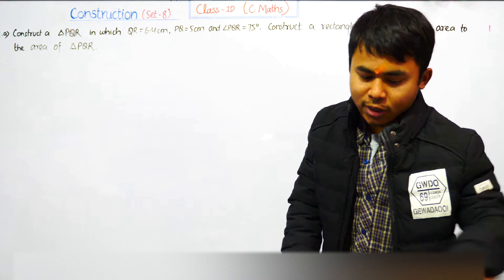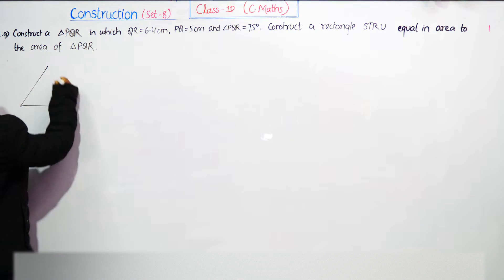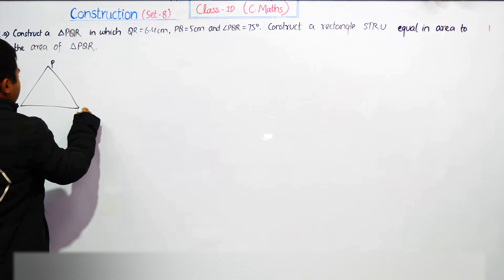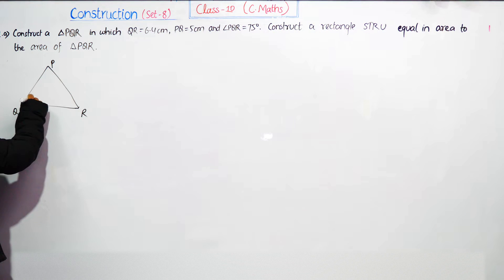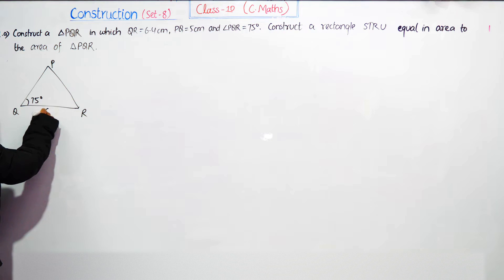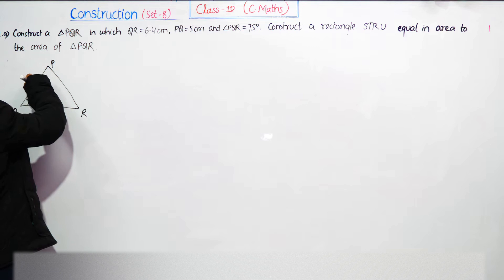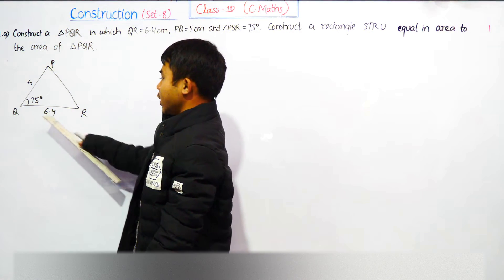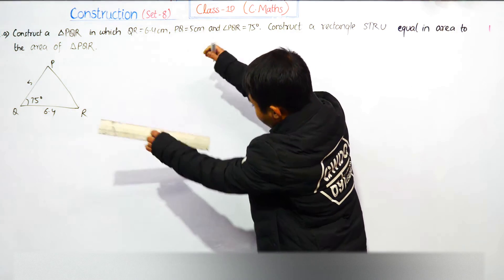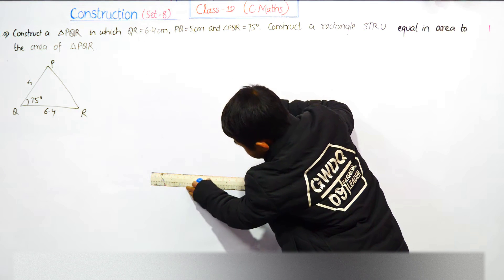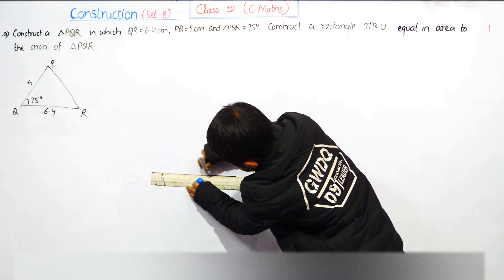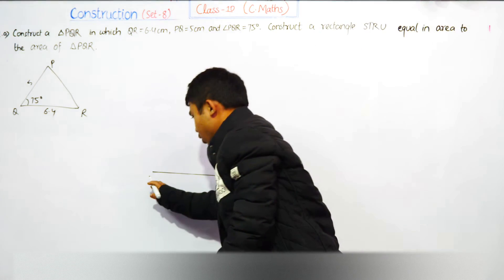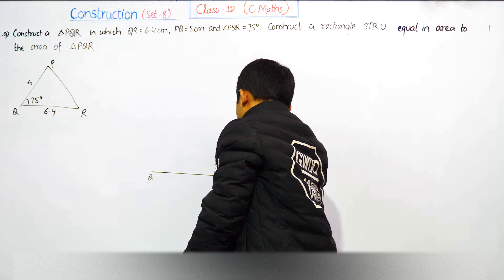Now let's construct triangle PQR. Angle Q is 75 degrees, QR is equal to 6.4 cm, PQ is equal to 5 cm. First, draw QR equal to 6.4 cm as the base.